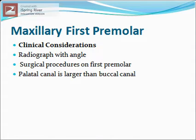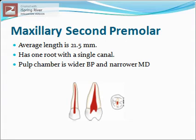Clinical consideration: to locate both canals properly, a good quality radiograph should be taken from an angle to avoid superimposition of the canals. Surgical procedures on the first premolar should be given more consideration since palatal roots may be difficult to reach. The palatal canal is usually larger than the buccal canal. Maxillary second premolar: the length of this tooth is about 21.5 mm.